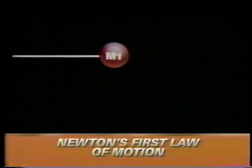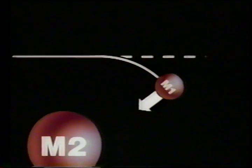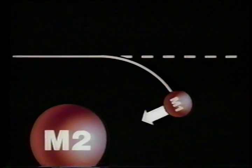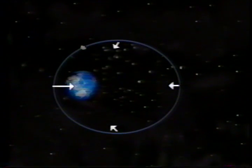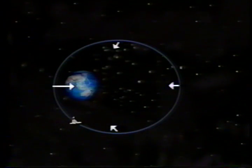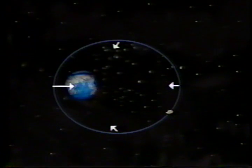A body in motion will keep moving at the same speed and in the same direction. A satellite moves in a curved path around the Earth because the Earth's gravitational pull acts as an external force on it.